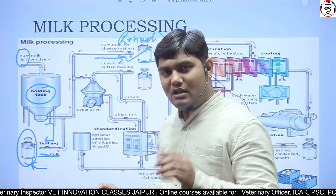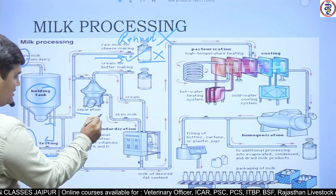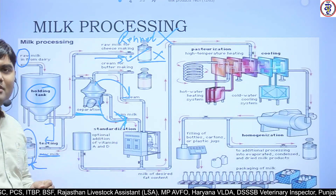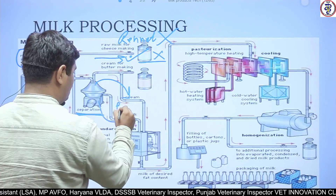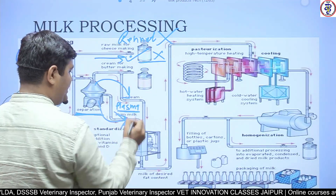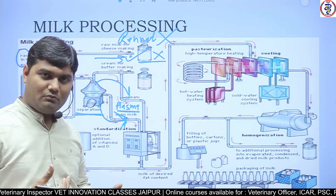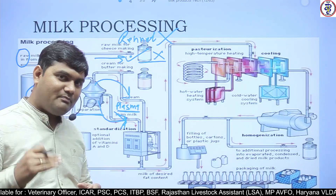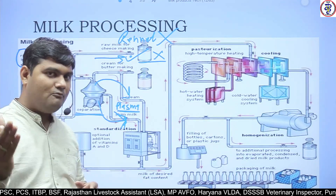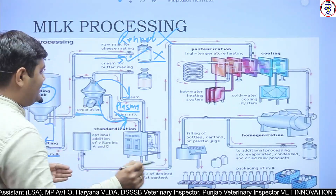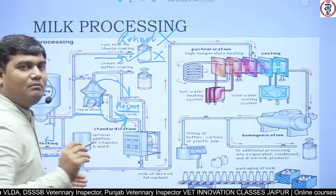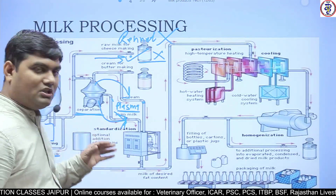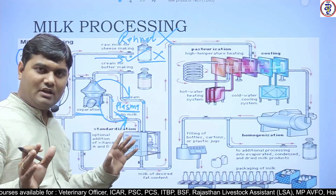From the raw milk, the next important step is separation — cream and skim milk are separated. Skim milk is sometimes referred to as plasma. Just as when blood is centrifuged, the cellular portion settles at the bottom as packed cell volume and the supernatant is called plasma — similarly, when fat is removed from milk, the remaining portion is called skim milk or plasma. Plasma and skim milk are the same thing — this is an important term in dairy technology.